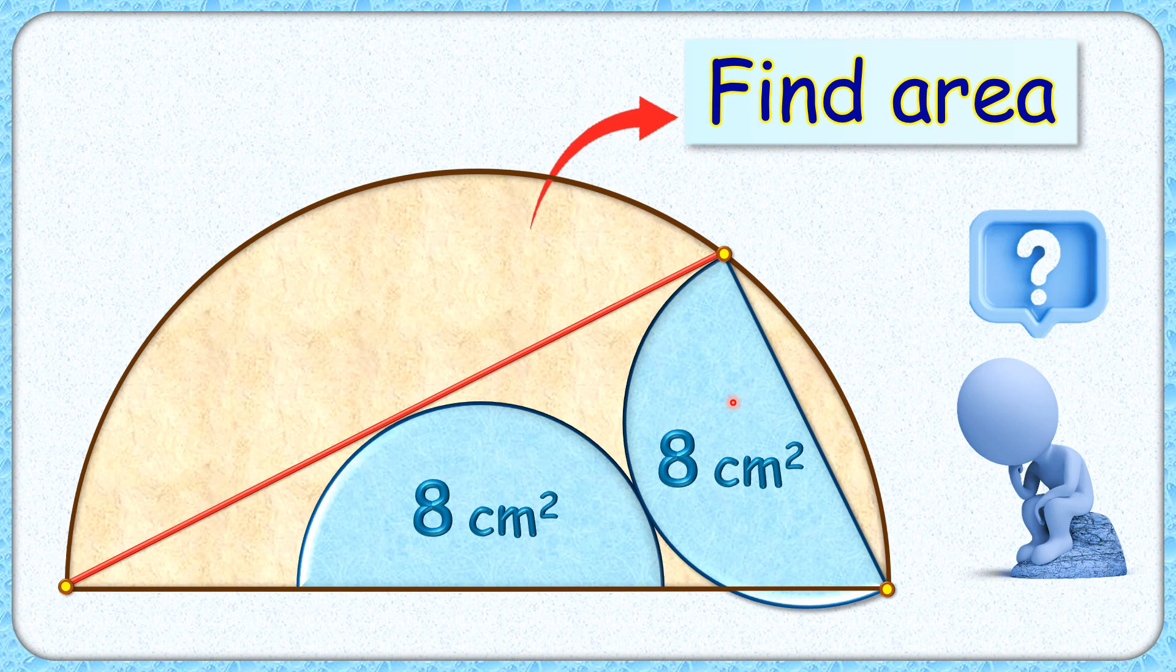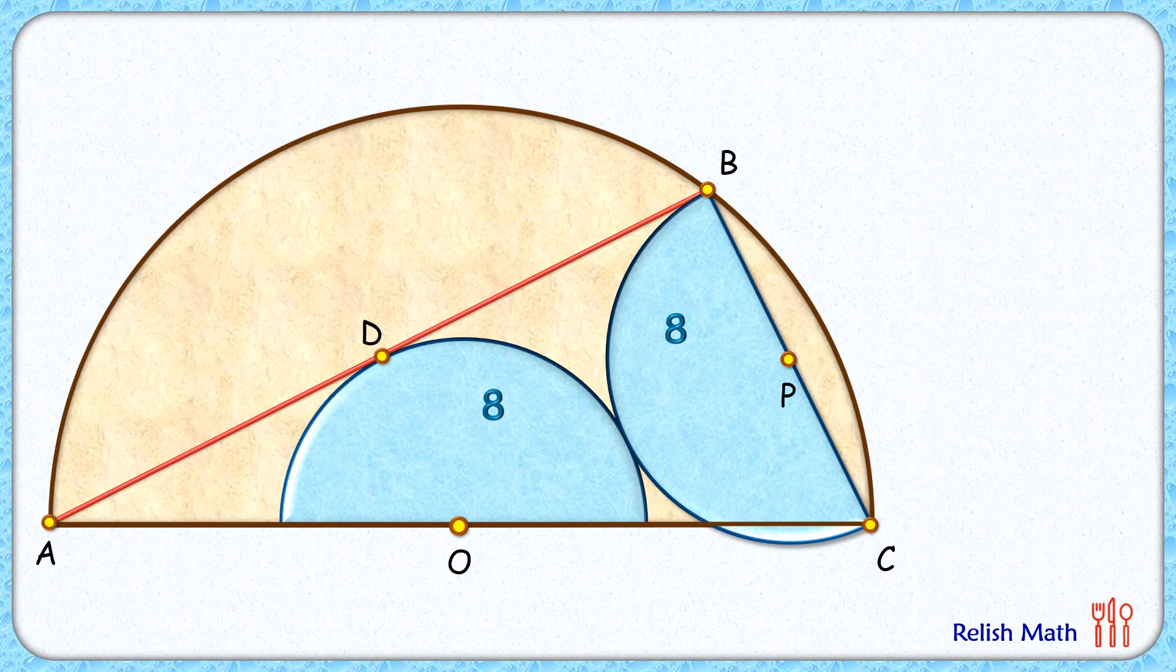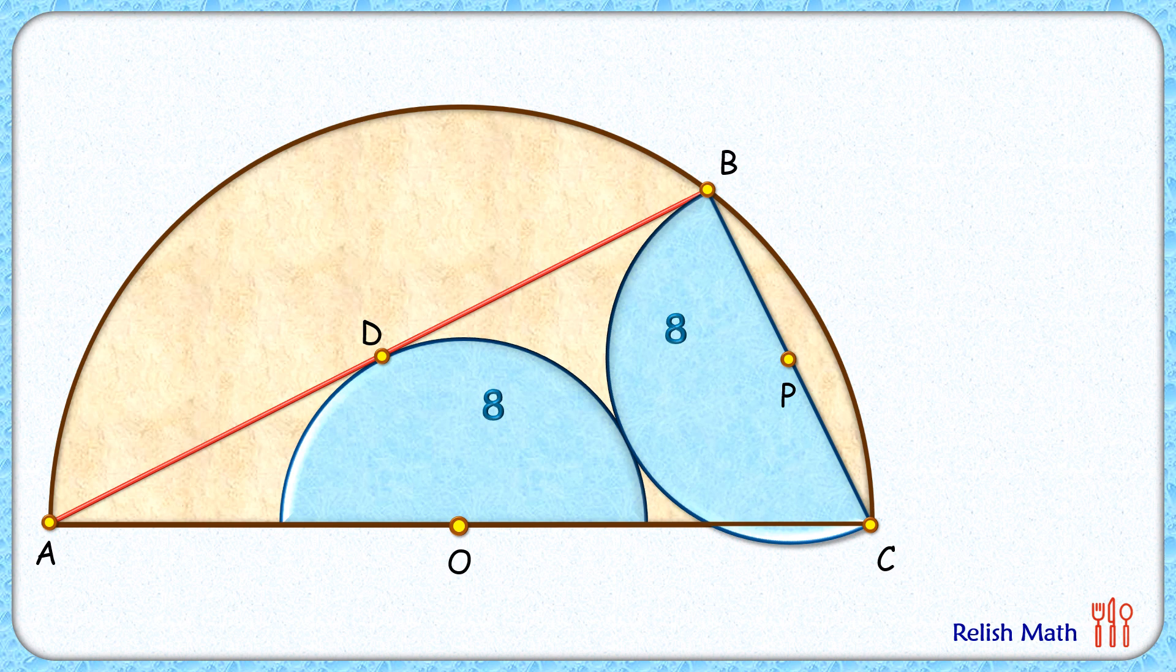Let's check this simple and elegant solution. We'll solve the question in two parts. First part: we'll prove that this center O of this blue semicircle is also the center of this brown semicircle. Second part: we'll find the area of this brown semicircle.